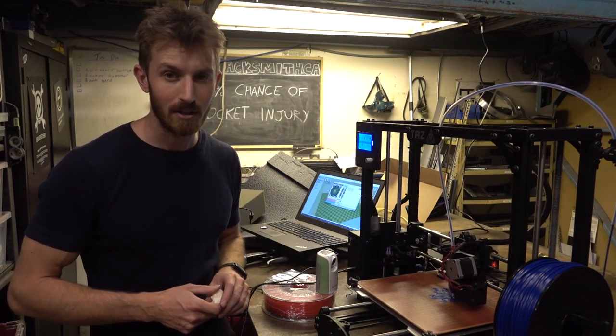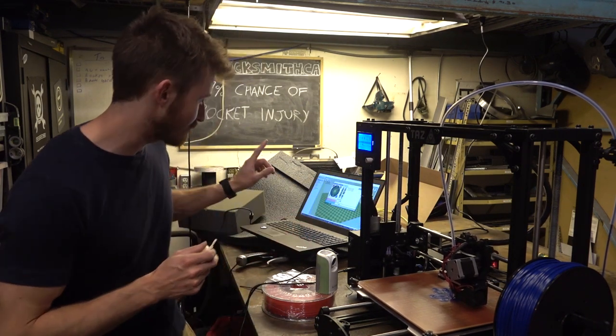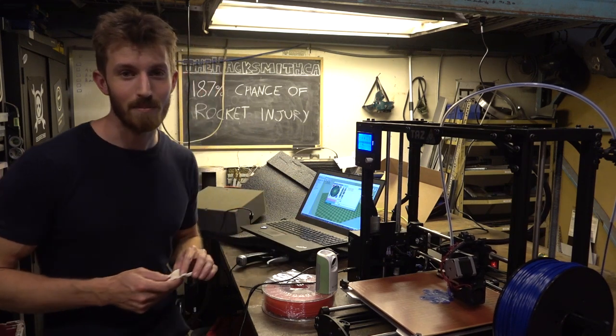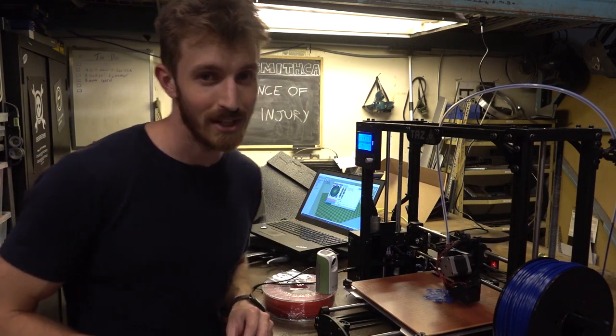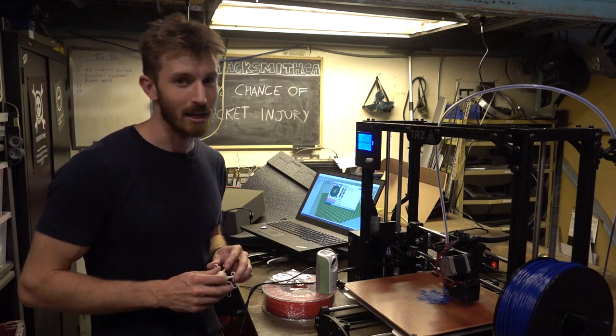But it seems to be printing fine, so we're going to move on to an actual proper part that we need for the Iron Man Flight System Mark II. It's a bracket for our EDF.